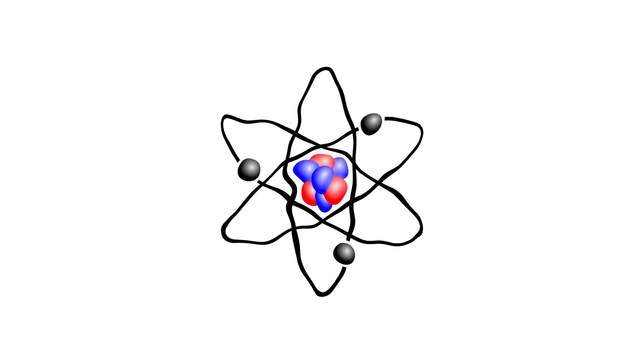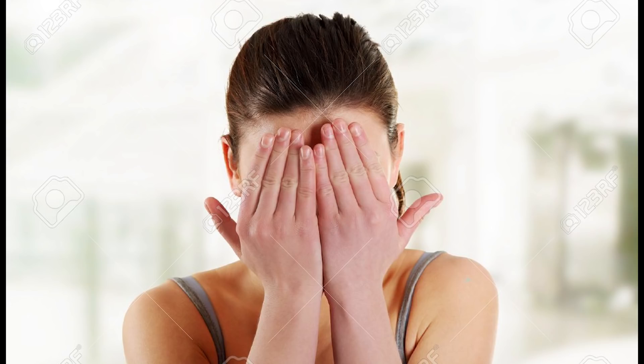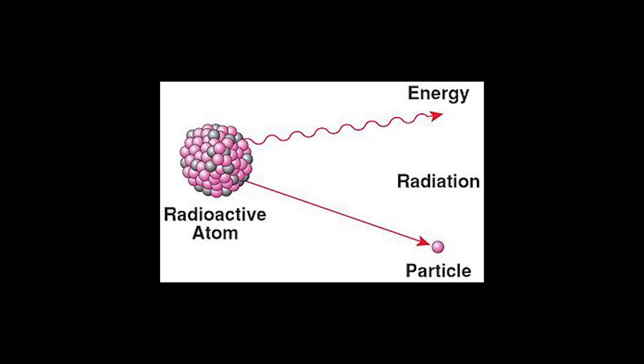In order to become stable again, atoms will usually fire electrons out. This is called radioactive decay. It happens spontaneously, so there is no real way of predicting when this will take place.